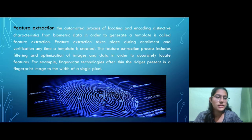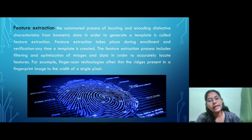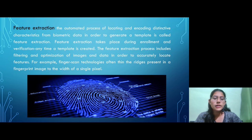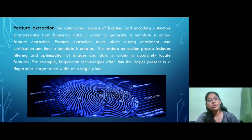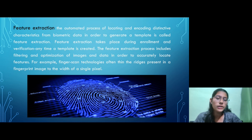The next step is feature extraction. Feature extraction takes place during both enrollment and verification — basically any time a template is created. Feature extraction is an automated process of locating and encoding the salient features from biometric data in order to generate a template. The process includes filtering and optimization of the image and data in order to accurately locate the features.